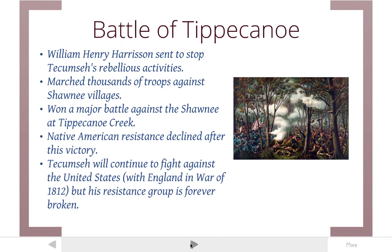A man named William Henry Harrison is sent to stop Tecumseh's rebellious activities. He marches thousands of troops against Shawnee villages and wins a major battle at Tippecanoe Creek — the Battle of Tippecanoe — which breaks Tecumseh's resistance group. There is no longer a Tecumseh resistance group after the Battle of Tippecanoe, and Harrison's victory stops this Native American uprising before it really gets started. Tecumseh will continue to fight against the United States and will fight on the side of England in the War of 1812, but his resistance group is forever broken.